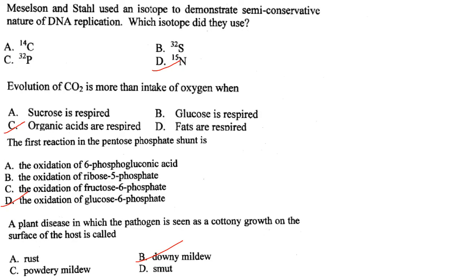Meselson and Stahl used an isotope to demonstrate the semi-conservative nature of DNA replication. The isotope they used was N15. Answer is option D.